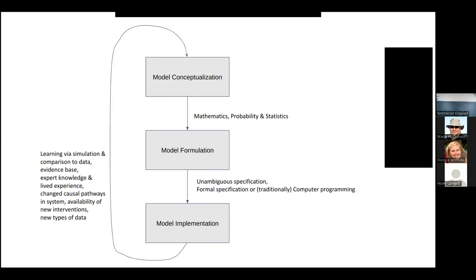With system dynamics, for example, model formulation often gives you the model implementation — you have a declarative model formulation. When I say declarative, you're basically specifying what you're characterizing, not the detail of exactly how it is to be enacted or simulated. With system dynamics, you're sketching out model structure and providing some formulas, but the model formulation implies the model implementation. The numerical integration follows from the model formulation.